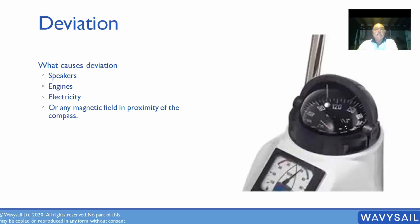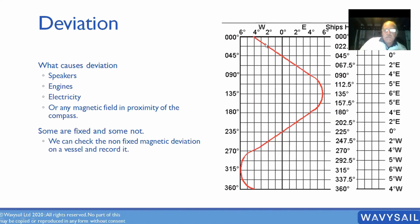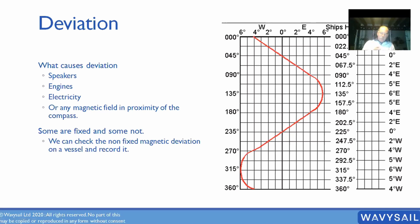It must be a ferrous metal to affect the compass — non-ferrous metals don't. We take the boat, point it in various directions starting at zero, and using fixed points on land slowly turn it around all the way to 360 degrees, recording the deviation. As the boat changes course the deviation changes — this is called a deviation card, also known as swinging a compass. You'll notice it makes a very neat curve, because the engine is stable but the earth's magnetic field pulls the compass one way then the other as the boat spins.